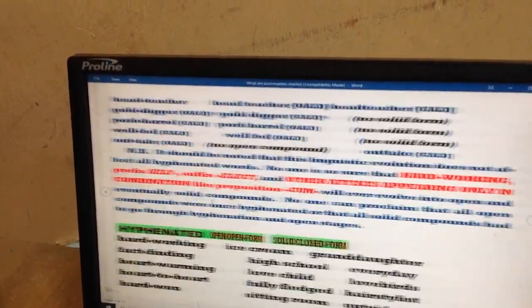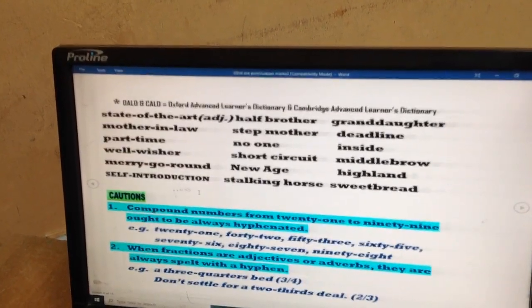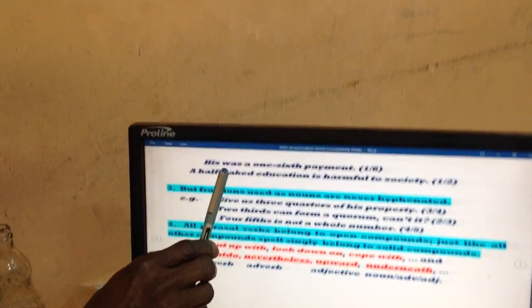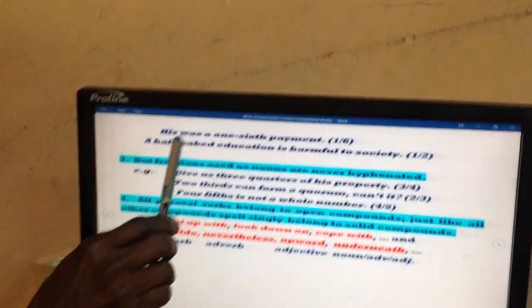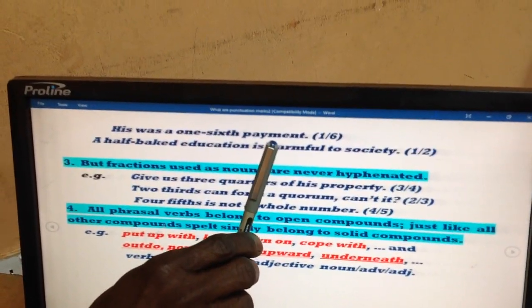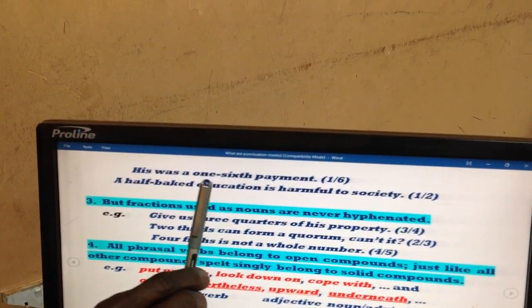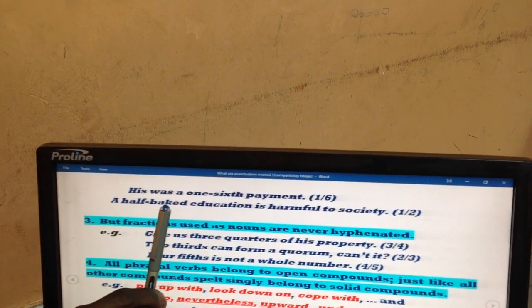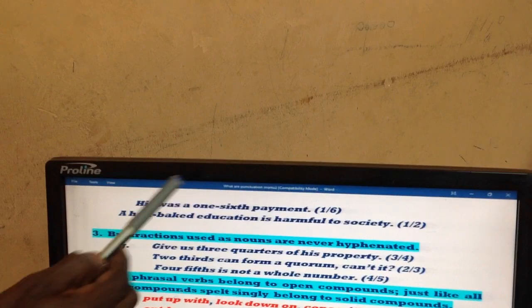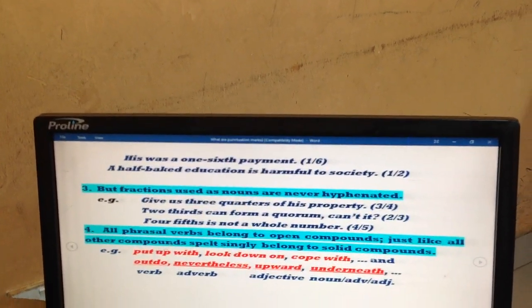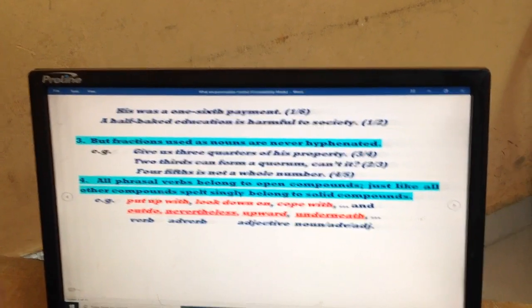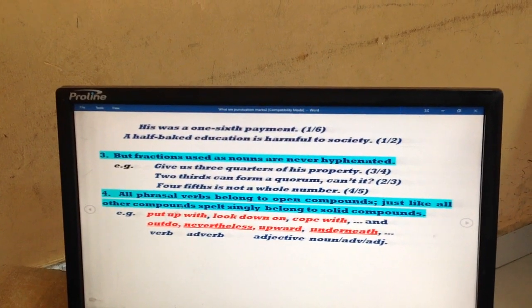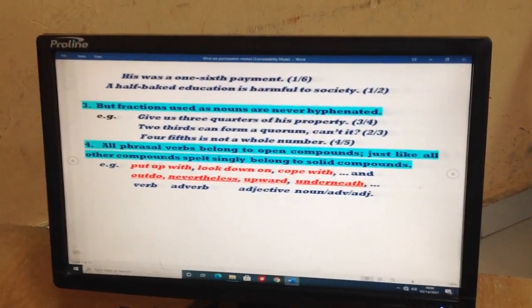He was one. His was a one-sixth payment. One-sixth is an adjective describing the payment. A half-baked education. Still, as you can see, these are all what we call attributive adjectives. They are used in front of nouns. That's why they are called attributive adjectives. Because predicative adjectives will never stand in front of a noun. That's another situation.